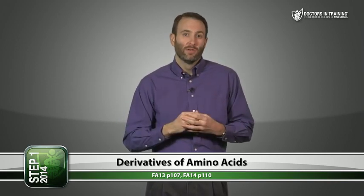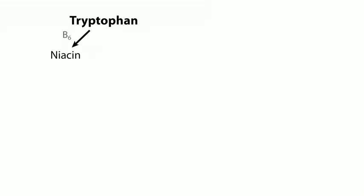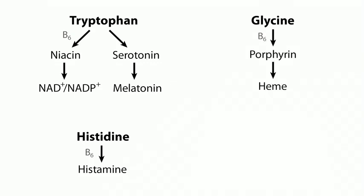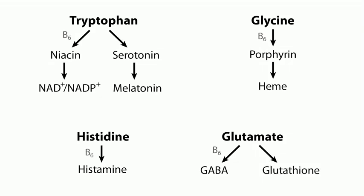Several amino acid derivatives are dependent on vitamin B6 as a cofactor. Tryptophan is converted to niacin, important for generating NAD and NADP, essential in oxidation-reduction reactions. Tryptophan is also a precursor to serotonin, which is a precursor to melatonin — made by the pineal gland. Histidine is converted to histamine. B6 is needed for glycine's conversion to porphyrin, which is converted to heme — the rate-limiting enzyme is aminolevulinic acid synthase. Glutamate produces GABA, the main inhibitory CNS neurotransmitter; B6 deficiency can reduce GABA and cause seizures. Glutamate also generates glutathione, an important antioxidant.